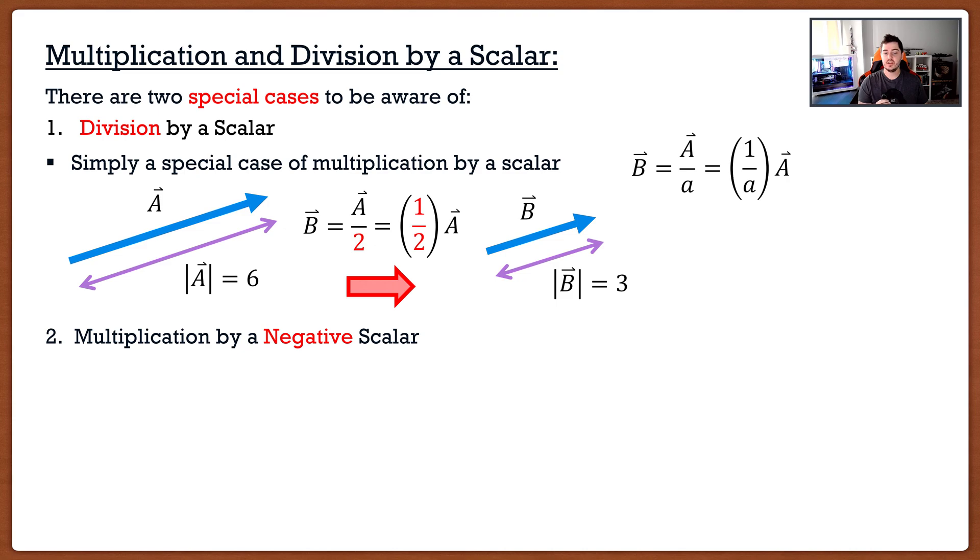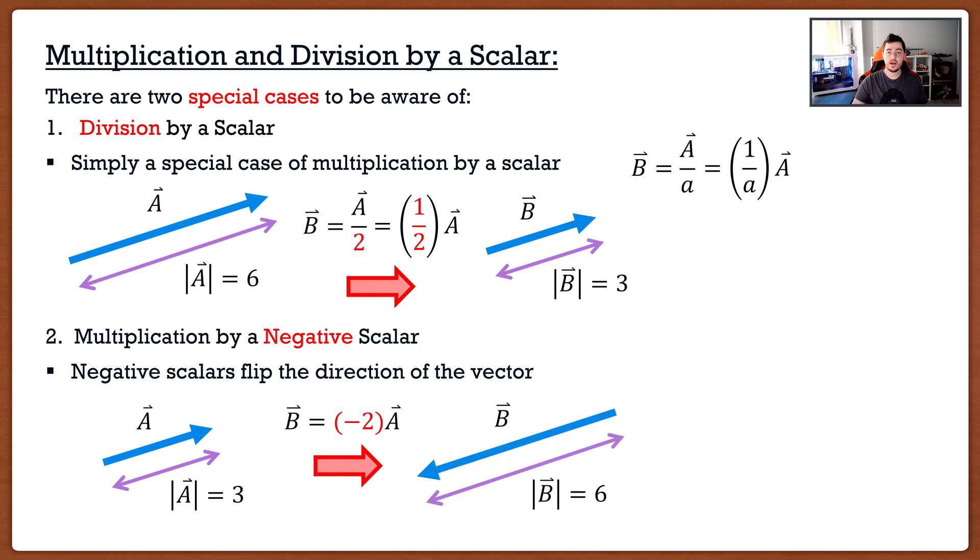The second special case is multiplication by a negative scalar. Negative scalars just flip the direction of a vector. Let's say we had our vector A with a magnitude of 3, and we multiply it by -2. We scale that vector by a factor of 2, so the new magnitude becomes 6. But since we have a negative, the arrowhead simply flips to the other side. Even though we multiplied by a negative number, the magnitude stays positive. Magnitudes are always going to be positive values.